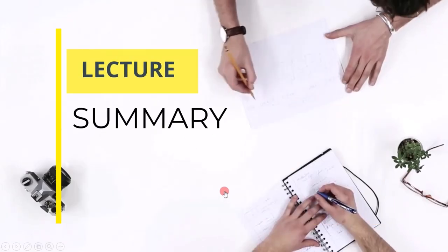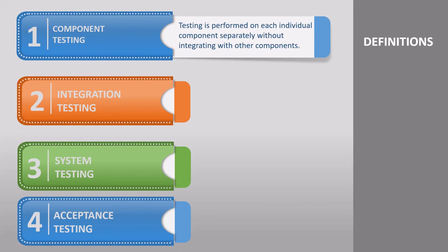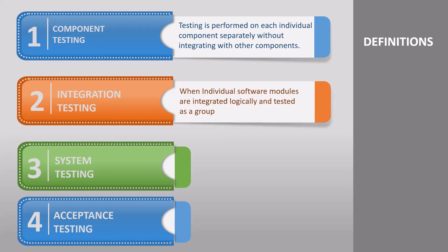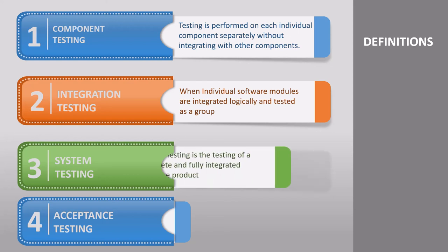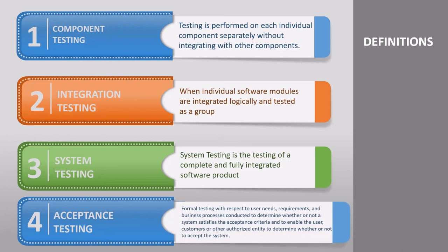Now let's summarize all the definitions covered. First, component testing: testing is performed on each individual component separately without integrating with other components. Second, integration testing: individual software modules are integrated logically and tested as a group. Third, system testing: the testing of a complete and fully integrated software product. Last, acceptance testing: formal testing with respect to user needs, requirements, and business processes, conducted to determine whether or not a system satisfies the acceptance criteria and to enable the user, customer, or other authorized entity to determine whether or not to accept the system. That's it from this lecture. Thank you.